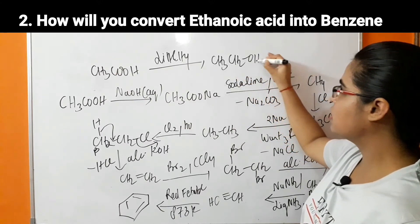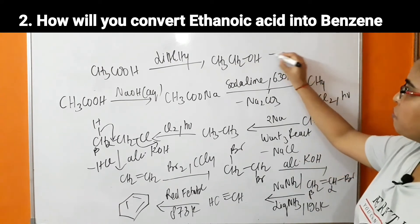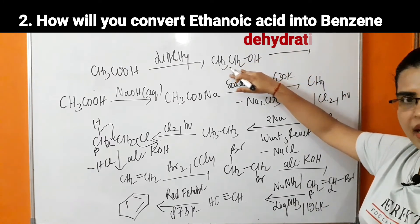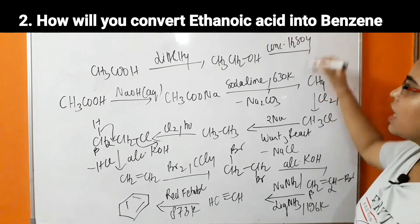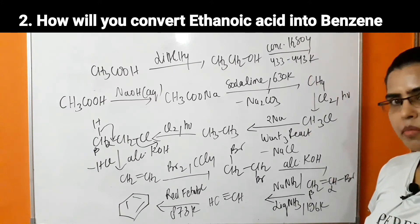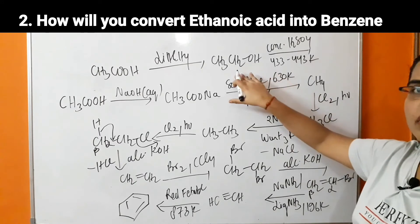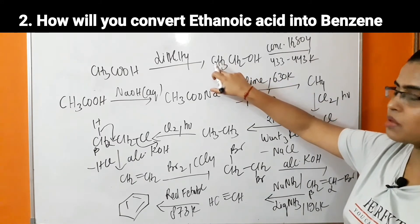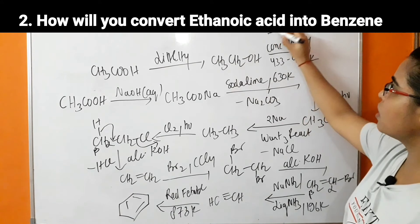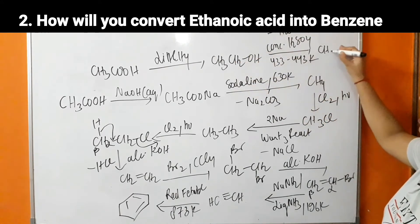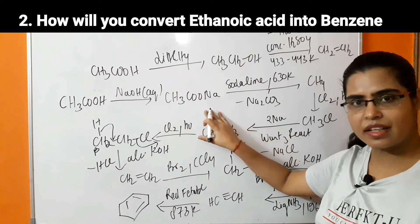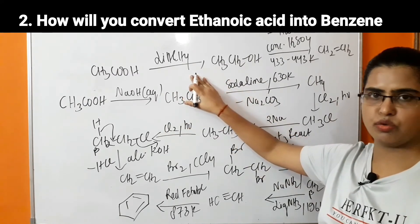From ethanol, further dehydration is carried out by reacting in the presence of concentrated H₂SO₄ at 433 to 443 Kelvin. Dehydration — removal of a water molecule — takes place: hydrogen from the beta carbon and OH from the alpha carbon are removed. There is removal of H₂O and formation of ethene. Using these reagents, the number of steps in the reaction is decreased and less time is consumed.